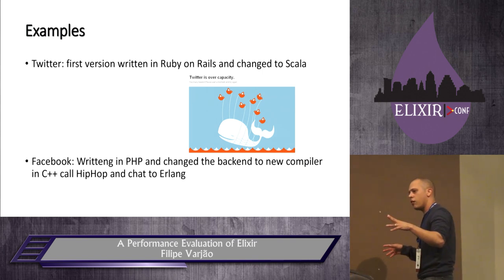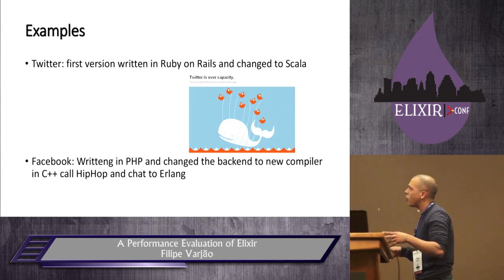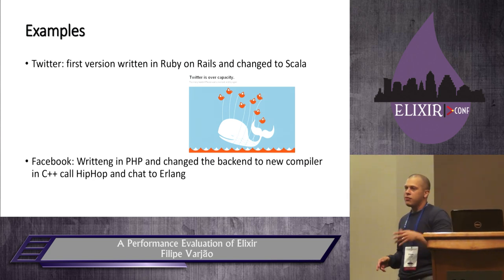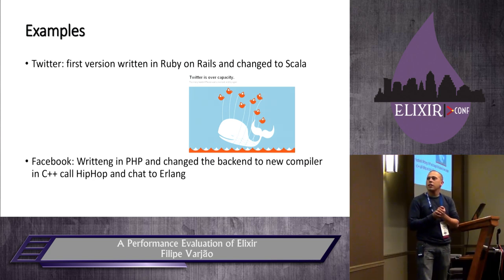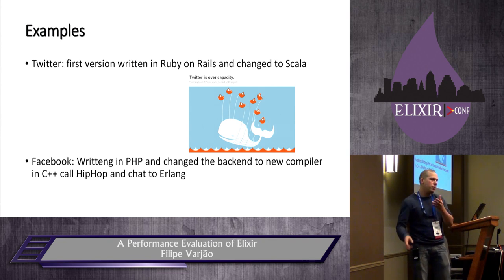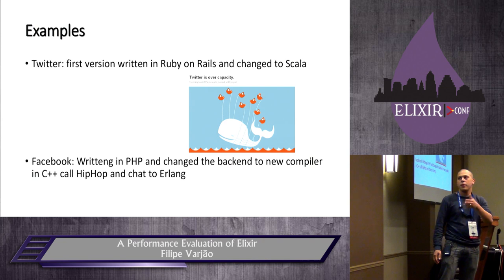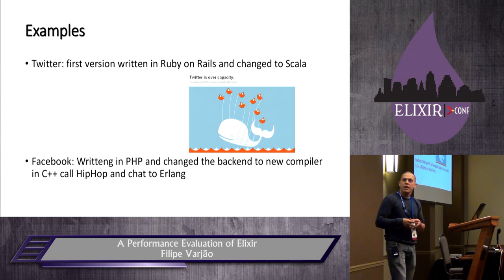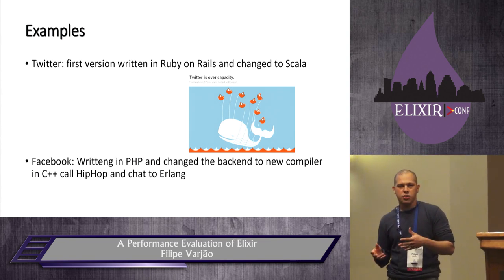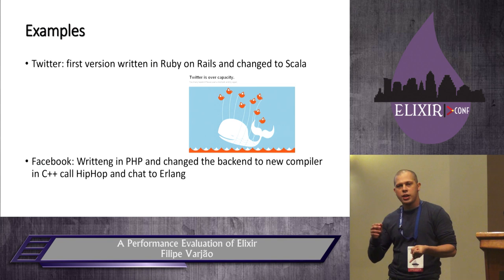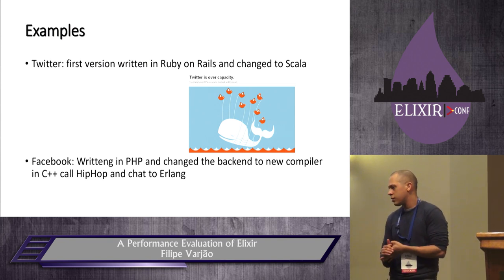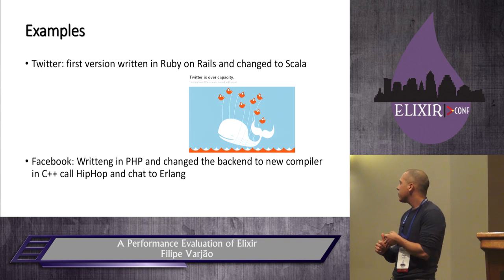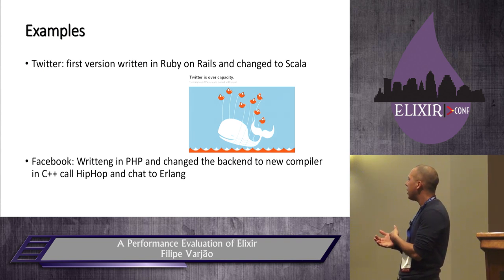Before the big ban, all of Twitter's back-end core was changed to Scala. And Facebook too — Facebook created a new compiler for C++ called HipHop, and changed their chat to Erlang, because they received a huge amount of access and it's very easy to write applications for the web and create social network games.